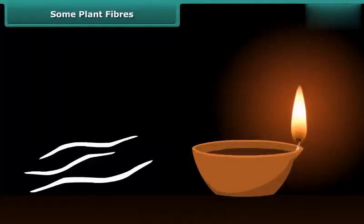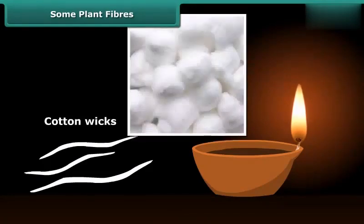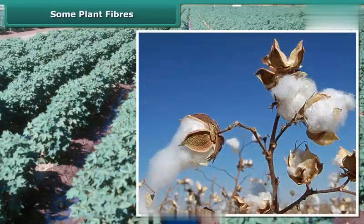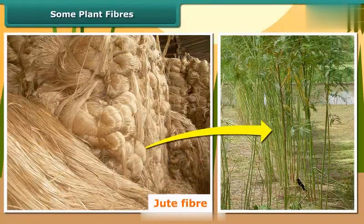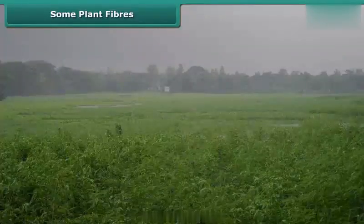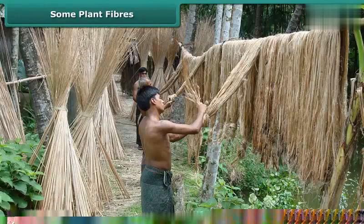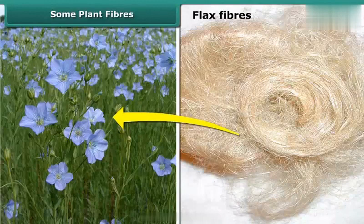Have you ever made wicks of earthen lamps during Diwali festival or other occasions? They are made up of cotton, which is obtained from cotton plants grown in places having black soil and warm climate. The fruits of the cotton plant, after maturing, burst open and seed-covered cotton is obtained. Jute fiber is obtained from the stem of the jute plant and is cultivated during the rainy season. The stems of harvested plants are immersed in water for a few days, then the stems rot and fibers are separated by hand. Flax fibers are also obtained from the stems of the plant and are used mainly to make linen.